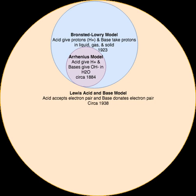The Bronsted-Lowry definition, formulated in 1923 independently by Johannes Nikolaus Bronsted in Denmark and Martin Lowry in England, is based upon the idea of protonation of bases through the deprotonation of acids — that is, the ability of acids to donate hydrogen ions (H+), otherwise known as protons, to bases, which accept them. An acid-base reaction is thus the removal of a hydrogen ion from the acid and its addition to the base.